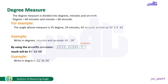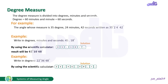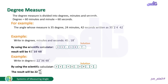Now let's see how we do the reverse. The example says: write in degrees — 22 degrees, 36 minutes, 48 seconds. We want to write this angle, given in degrees, minutes, and seconds, as decimal degrees only. Using the calculator: type 22, press the comma button, type 36, press the comma button, type 48, press the comma button, then press equal, then press the comma button again. The result will be 22 and 45 over 75 degrees — so we've converted the angle from DMS to decimal degrees.